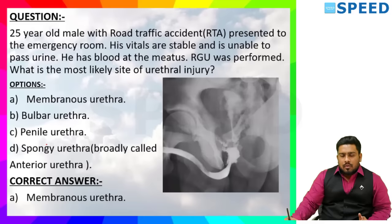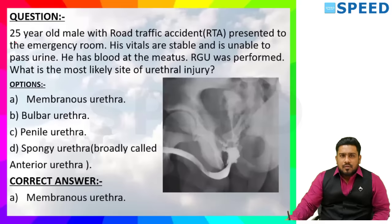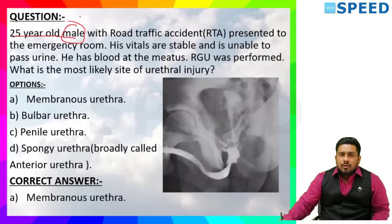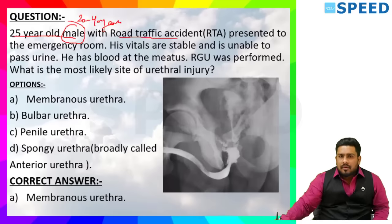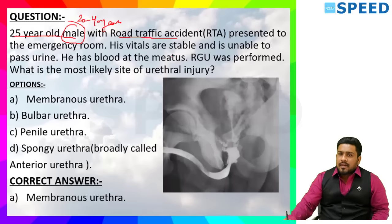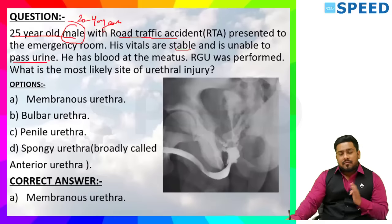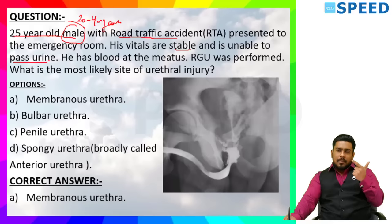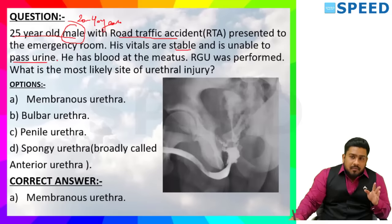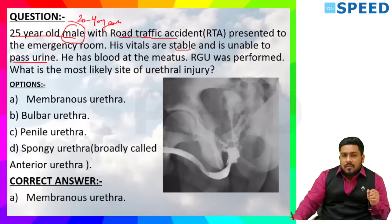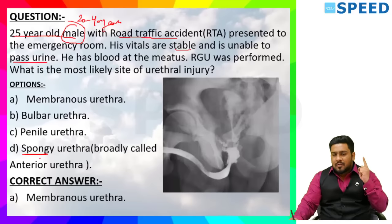Let us crack this question. 25-year-old male — 20 to 40 years male, high prevalence for road traffic accident. His vitals are stable but he is unable to pass urine, so there will be some sort of injury to be expected in the urethra. There are four parts of urethra: prostatic, membranous, bulbar, and penile. They have specifically added a word 'spongy urethra' to confuse students. Remember: spongy urethra is a term broadly used for the anterior urethra.